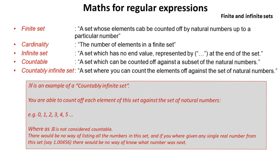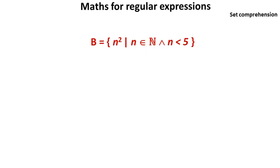R, for example, is not considered countable. There's no way of listing off or counting all the numbers in R. If you were given any single real number, for example 1.00456, there's no way of knowing what the next number's going to be.